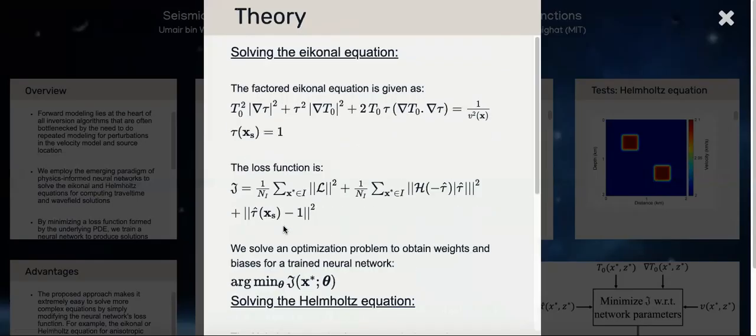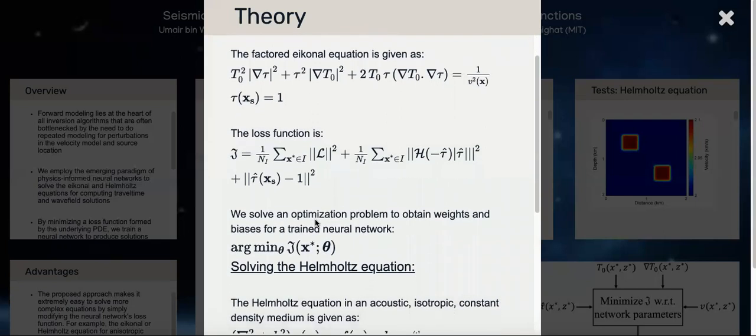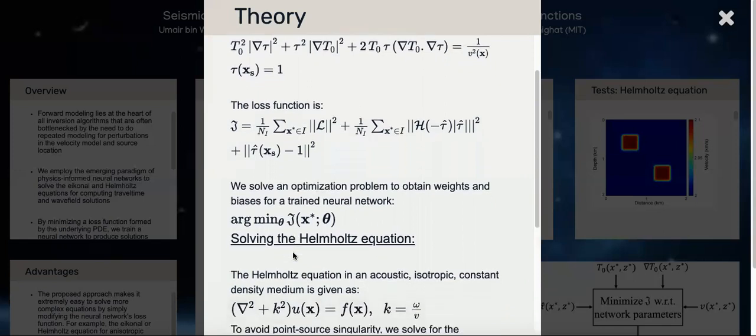A bit about the theory. What you see here is the factored eikonal equation. We find that instead of solving the regular eikonal equation, it's better to solve the factored eikonal equation because then you don't have to deal with the point source singularity. You embed that into the loss function along with additional terms that enforce the positivity of the solution and the boundary condition. Then you try to minimize this function for a bunch of collocation points, looking for the parameters of your neural network, such as the weights and biases, that minimize this function.